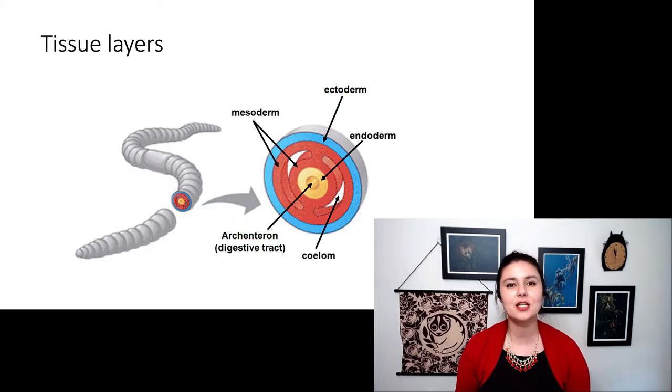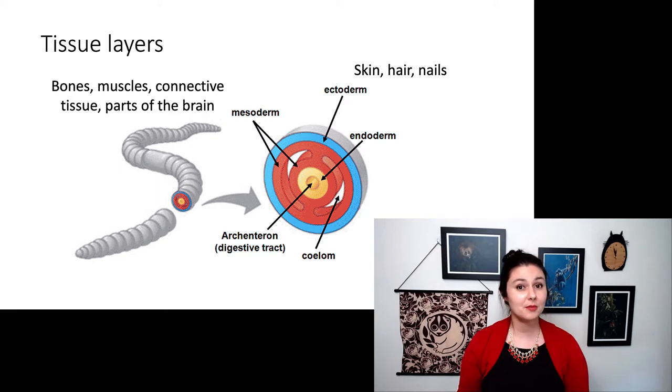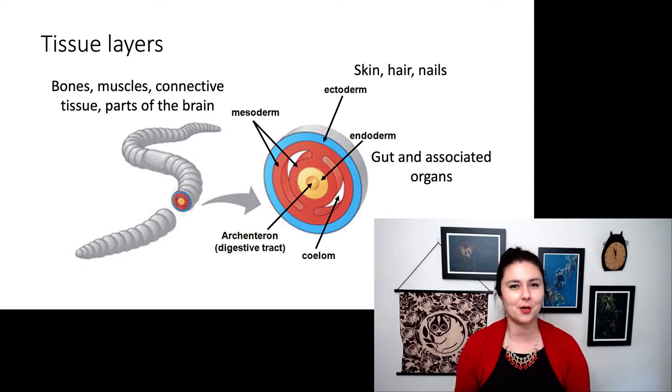Most animals have this three levels of tissue structure. We have our ectoderm, which is our, in us, is our skin, nail, and hair. Then we have our mesoderm in the middle: bones, muscles, some connective tissues, a little bit of our brain. And then that endoderm, that is really our digestive tract and the associated organs. If you're trying to remember which is which, remember ecto means outside, meso is in the middle, and endo is on the inside. So that can help you remember what's going on.